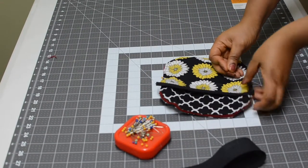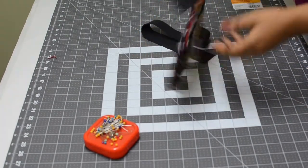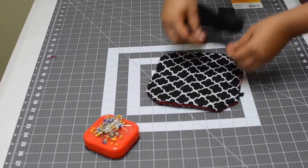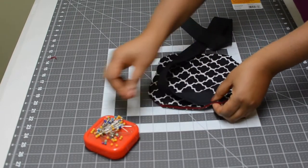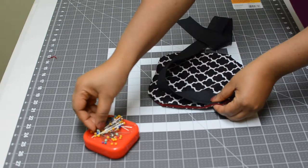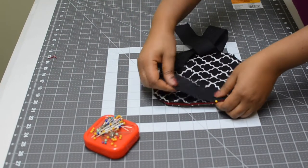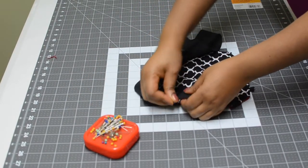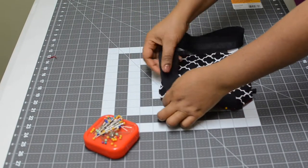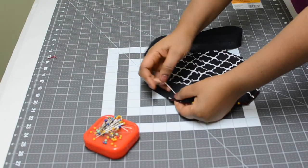Once again, take the bias tape and open it flat. Turn the coaster upside down, or the pad upside down, to the other side that doesn't have the shorter layer on top of it. Then start pinning your bias tape all the way onto the pad or coaster. Make sure you pin it all the way around.